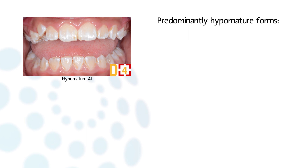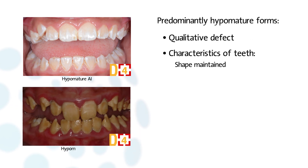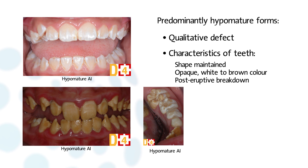Predominantly hypomature forms are a qualitative defect. Tooth shape is maintained but the color is opaque, white to brown. Post-eruptive breakdown may occur. Enamel is hard enough, but on X-rays, enamel appearance is less radiopaque.